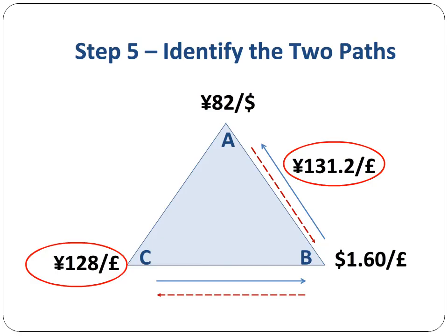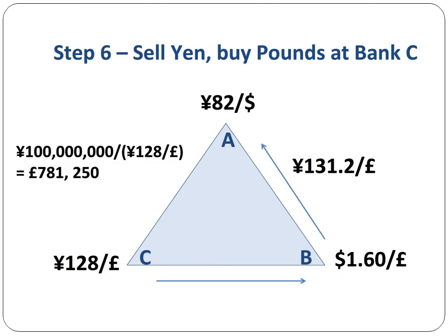Let's do our analysis. If we start with Bank A, we pay 131.2 yen to receive a pound. If we start at Bank C, we pay a lower amount of 128 yen to receive a pound. Obviously, we want to pay the lower amount. So we start with Bank C and not Bank A.